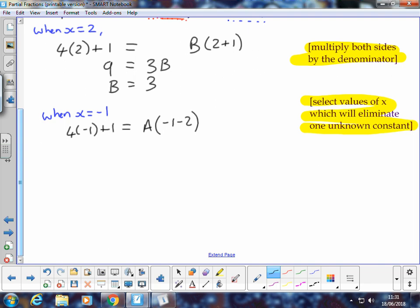What I've got on my left, I've got negative 4 plus 1 is negative 3, equals negative 3A. Divide through by negative 3, we've got A equals 1.